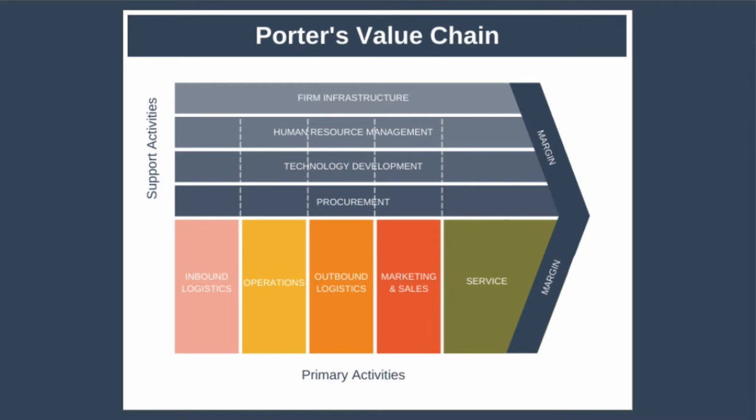First, we have primary activities that directly develop your inputs into outputs. Note that these primary activities are drawn in the order they happen, so for example, inbound logistics happens before outbound logistics. Secondly, we have support activities, and these help your primary activities run more smoothly. Let's take a deeper look at both of these categories.